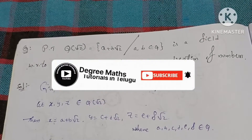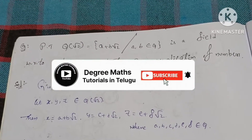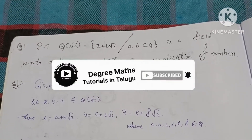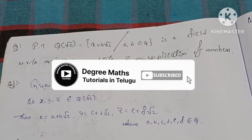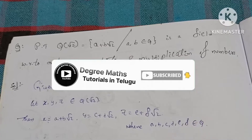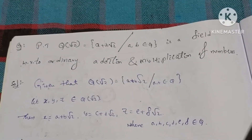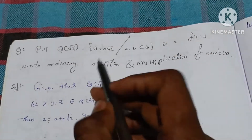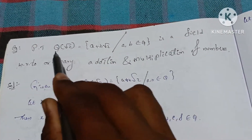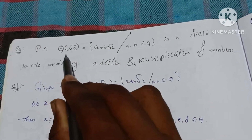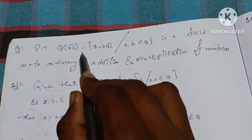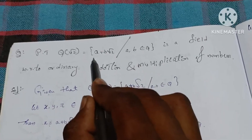Please like the video and subscribe to my channel. This is an important question. Let's prove that Q(√2) is equal to the set of elements of the form a plus b root 2.